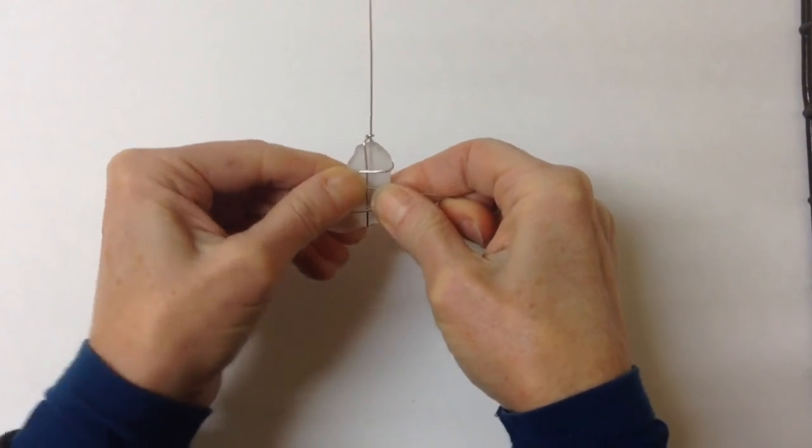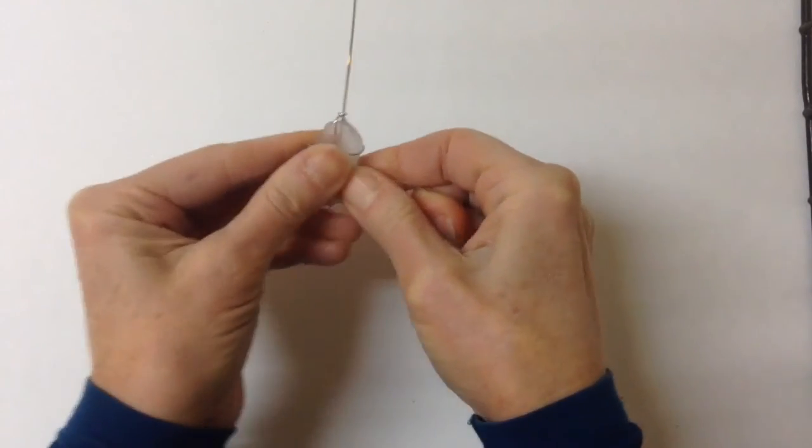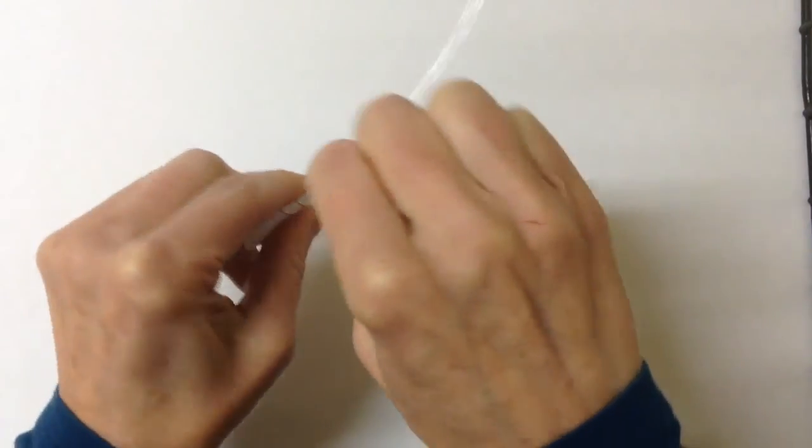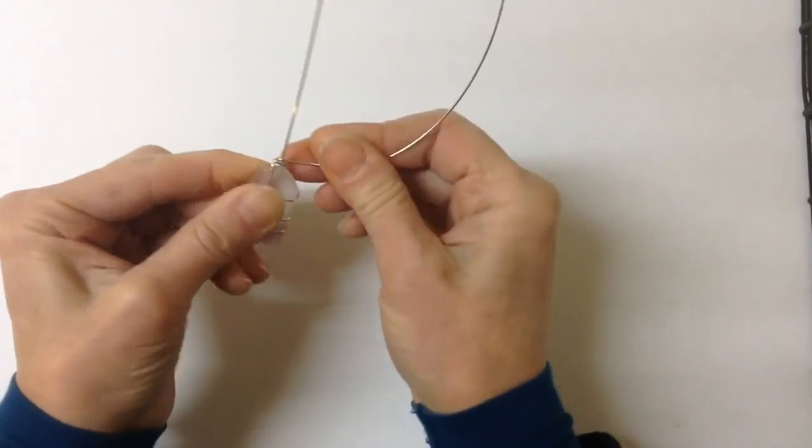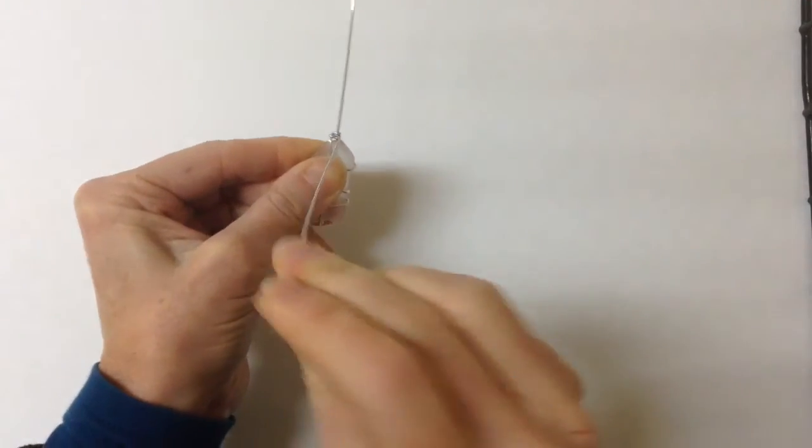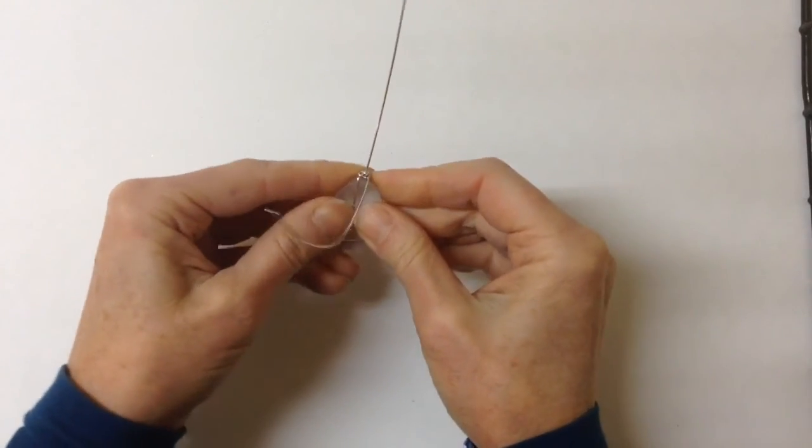However, depending on the shape of the glass is where you're going to decide to twist it. And then we're going to do a full turn around here.